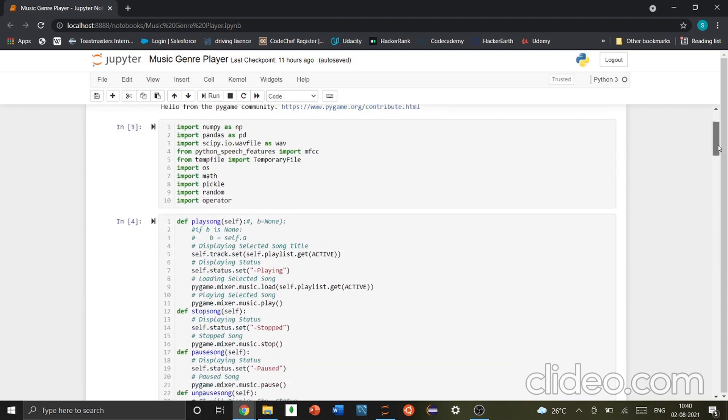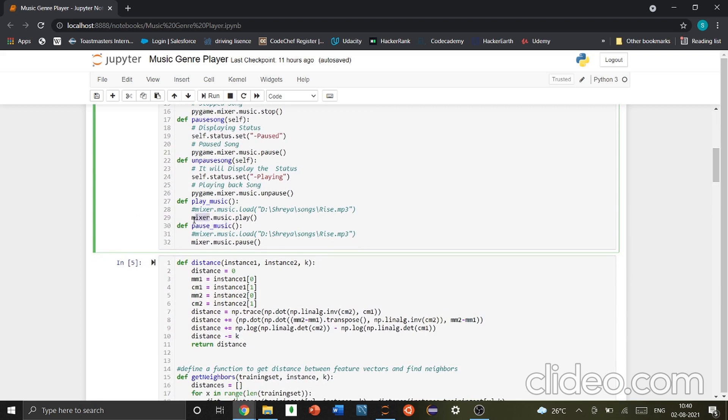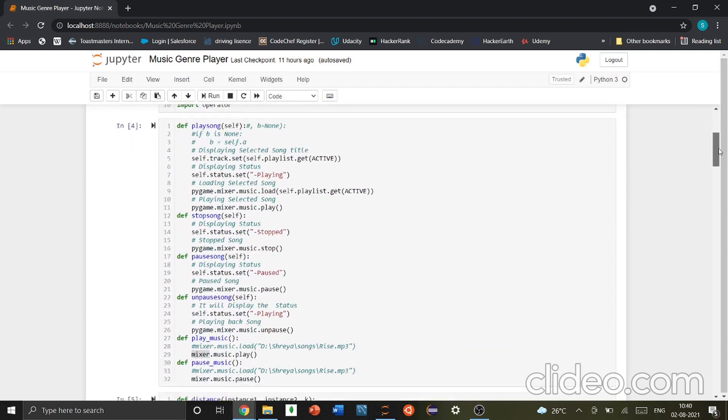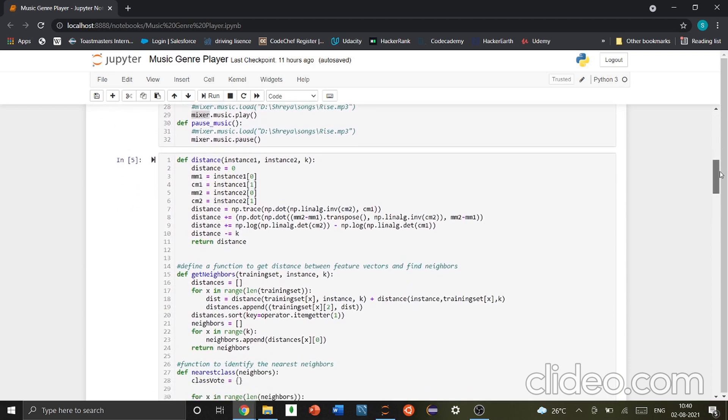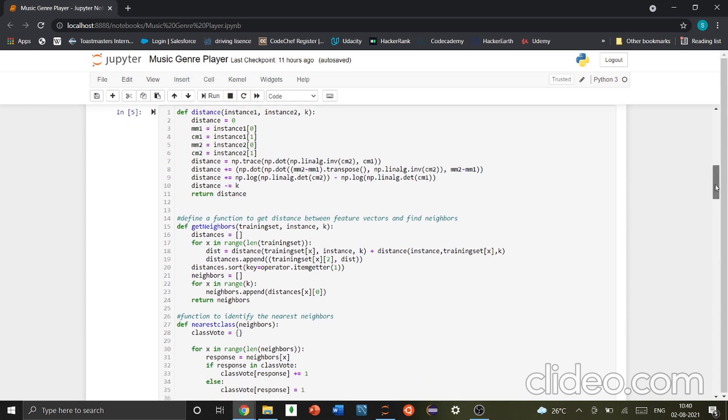Now, this is part of the Tkinter and Pygame libraries which is used in the user interface. You can see that there are different functions - PlaySong, StopSong, PauseSong, UnpauseSong. And we have used the library from Pygame called Mixer. If you can see up here we have imported from Pygame, we have imported Mixer. That is used to play different songs and we will be using it. I will be showing the output in just a few minutes and we will be able to see how that works.